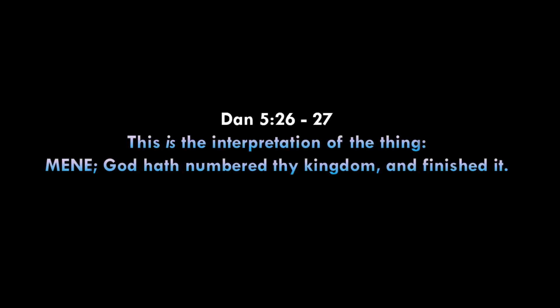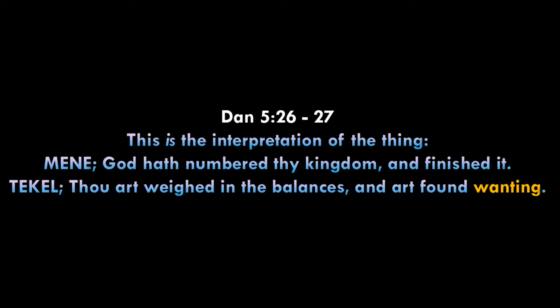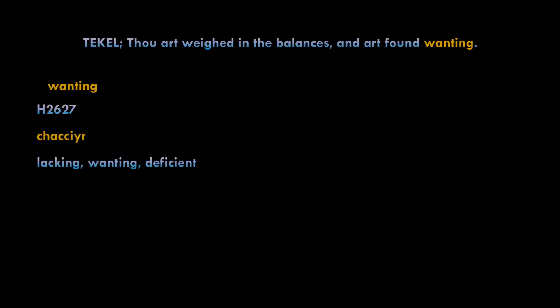Now let's look at the writing on the wall again. The writing that was written: Mene, Mene, Tekel, Upharsin. The interpretation — Mene: God hath numbered thy kingdom and finished it. The next one says Tekel: thou art weighed in the balances and art found wanting. We want to look up what this word 'wanting' means. What is this word wanting? We're going to use the Strong's Concordance. That word 'wanting' — when you look up what is lacking, what is deficient — why is the writing on the wall? Thou art weighed in the balances and art found wanting, the verse says.